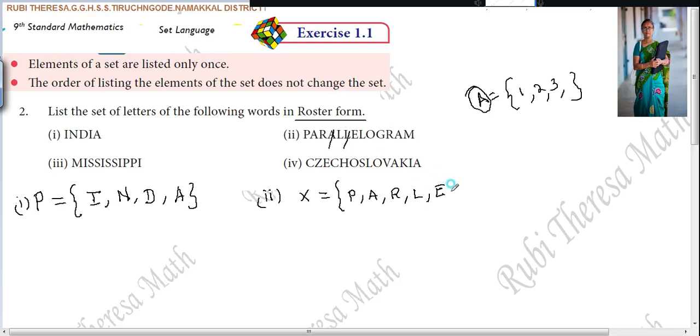E, comma, L already we wrote it. So not necessary. Next, O, G, R already we wrote it. Next, A - A also we finished writing. Next, M. Here you see the second point. The order of listing the elements of the set does not change the set.